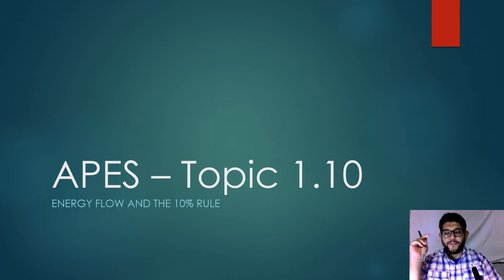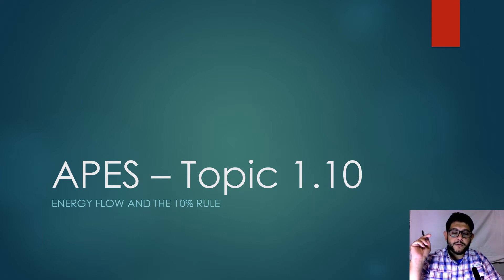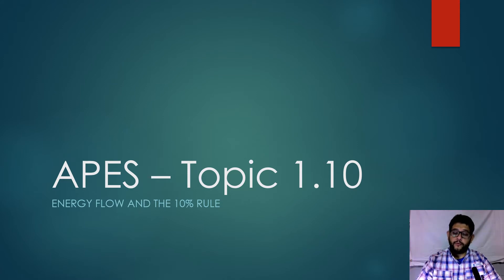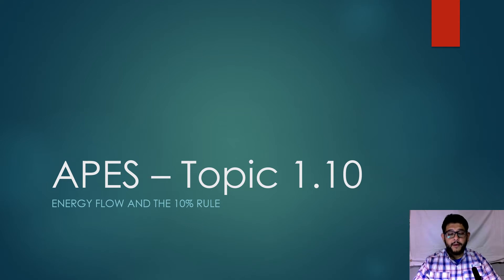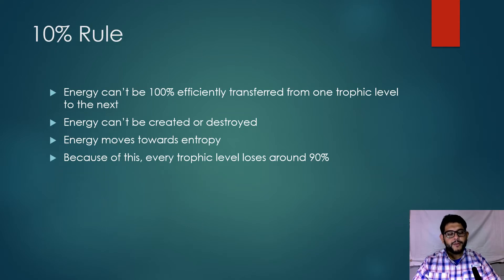Hi guys, this is Mr. V and welcome to APES review video topic 1.10: the energy flow and 10% rule. This is going to be a very short video because it's a pretty simple concept that we'll be able to show you in just one diagram. The first thing to remember is that energy cannot be 100% transferred from one trophic level to the next.